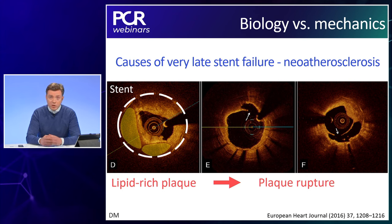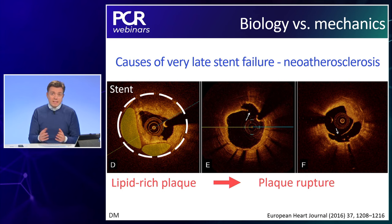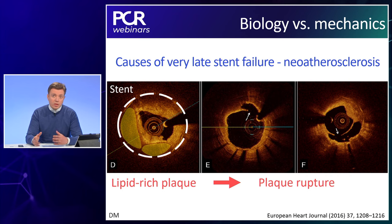Data from the PESTO registry, a French registry published in 2016, documented that in most cases of stent thrombosis there was some sort of mechanical failure as well — so it appears to be a combination of biology and mechanics. A question for Dr. Escanet: do you think the under-expansion could have triggered the neo-atherosclerosis that was also present here and ultimately resulted in a plaque rupture and STEMI?